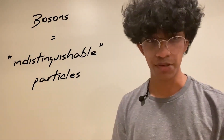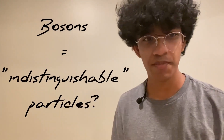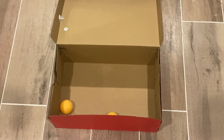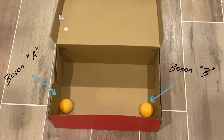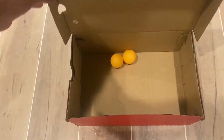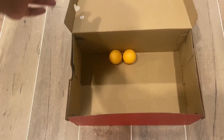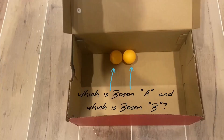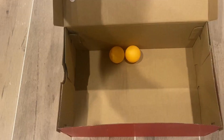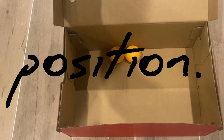Bosons are a special kind of particle in that they're indistinguishable from each other. What does that mean? Well, if I were to slap two hypothetical bosons into a box and have my sister shake them up, I would have no way of knowing which boson is which. I can't tell them apart based on any of their properties — including, and this is important, position.